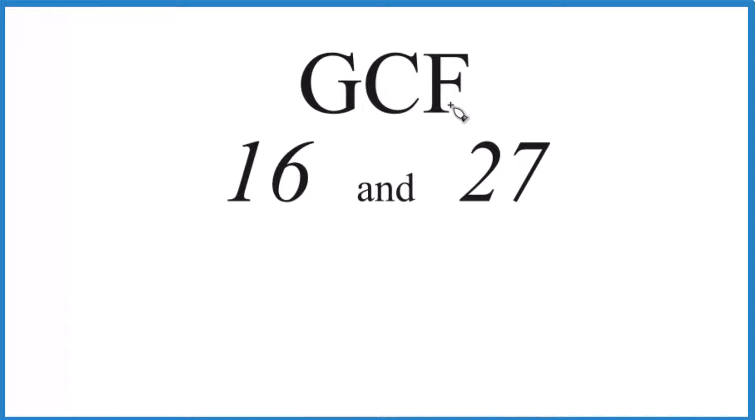The way we do this is we find the factors of 16 and 27, look at the common ones, compare them, and then select the Greatest Common Factor, that's the GCF.